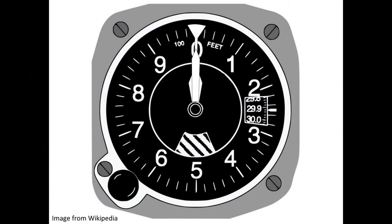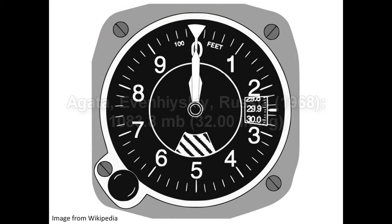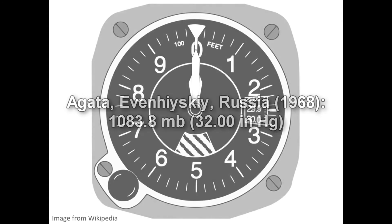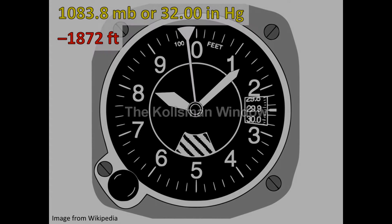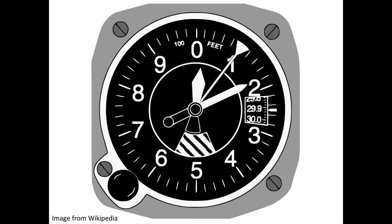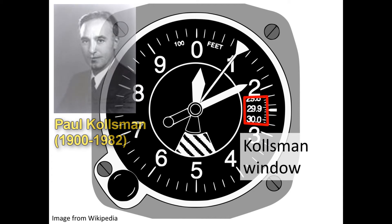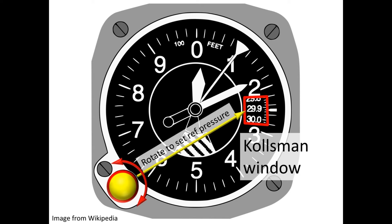That altimeter would have shown an altitude of about 4,150 feet. The highest atmospheric pressure ever recorded was 1083.8 millibars, or 32 inches; the altimeter would have shown about 1,872 feet below sea level. This inconvenience is solved by allowing the pilot to adjust the reference pressure used by the instrument. The proper reference setting is shown in the Kollsman window, named after American mechanical engineer Paul Kollsman, an expert in altimeter design. Here it shows 29.92 inches mercury, and the setting is adjusted using the knob shown.